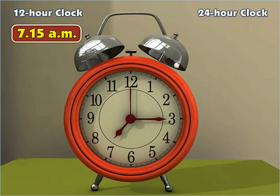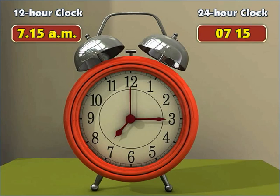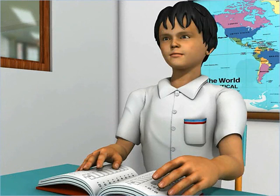If we were to write 7:15 a.m. in the 24-hour format, we would write it as 0715. The first two digits represent the number of hours that have passed since 12 midnight. The last two digits represent the minutes.